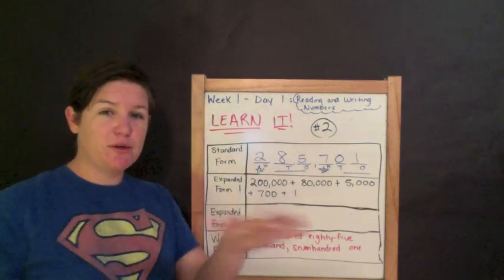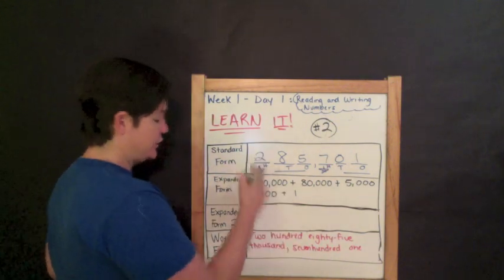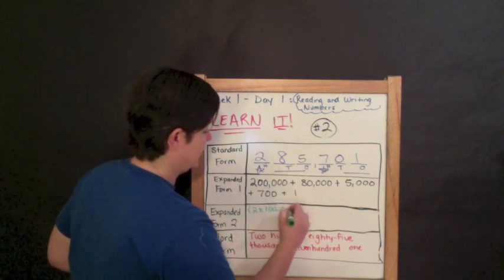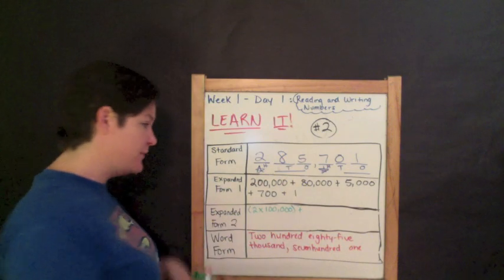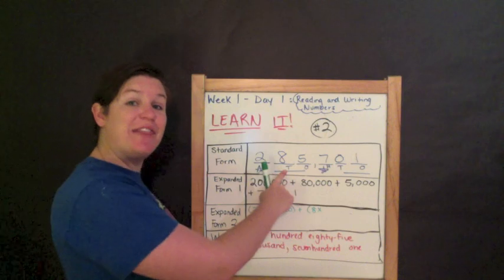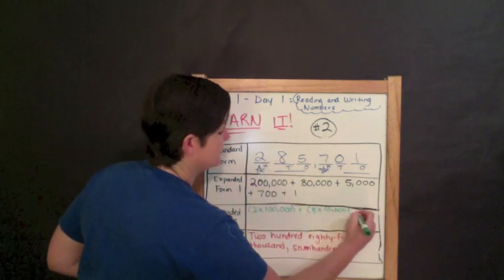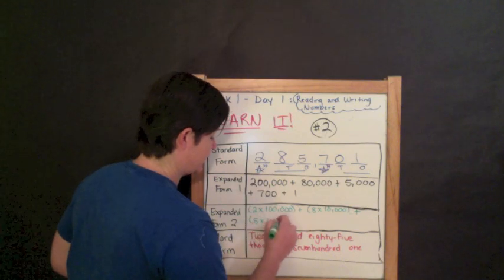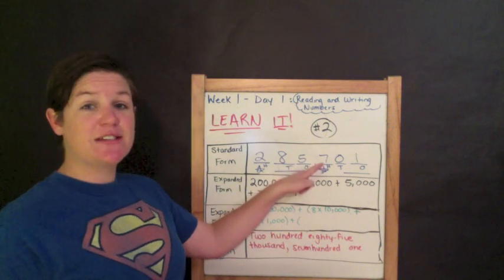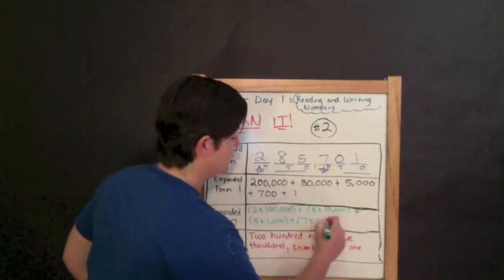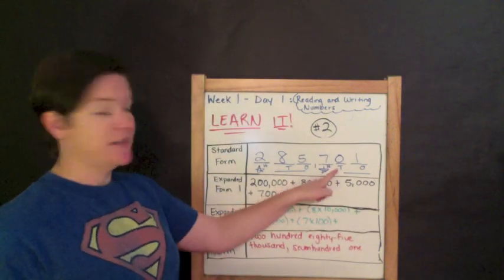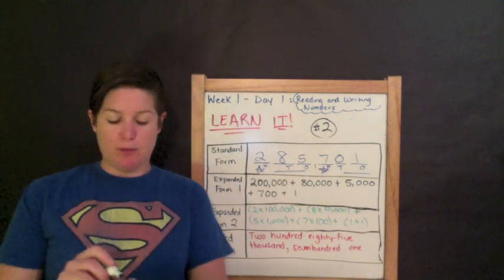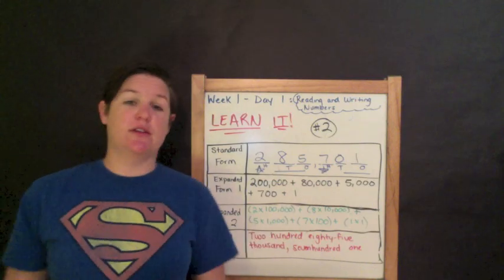Now I need my expanded form number two — that other way to write expanded form. So I've got two times — it's in the hundred thousands place — so I write one hundred thousand. Two times one hundred thousand is two hundred thousand, that's the value of my two. Plus eight times ten thousand. Plus five times one thousand, because my five is in the one thousands place. Plus seven times one hundred, which gives you seven hundred — that's the value of my seven. Plus nothing in the tens place, so just skip it. One times one. If you need to pause this video to record the information in the chart, that is totally cool.